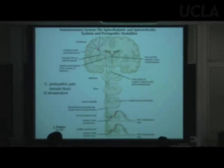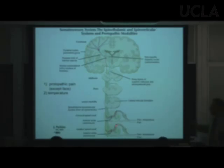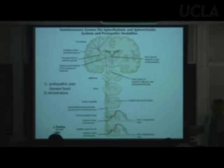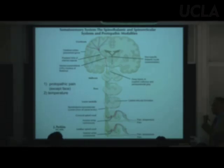After synapsing in the substantia gelatinosa, those cell bodies send their axons across the spinal cord at that same level — so the crossing happens way down in the spinal cord. Then they make a 90-degree turn and ascend. This is also called the anterolateral system, because the axons travel in the anterior and lateral white matter.